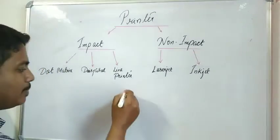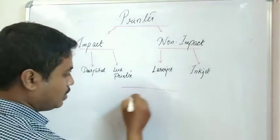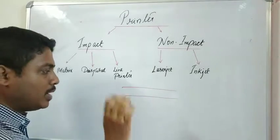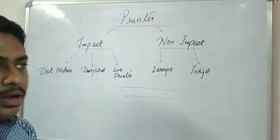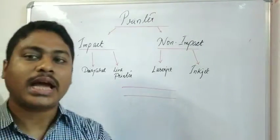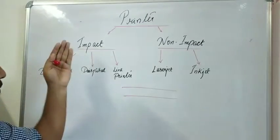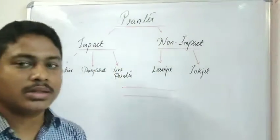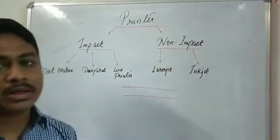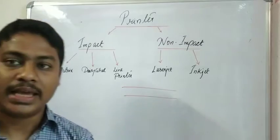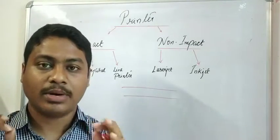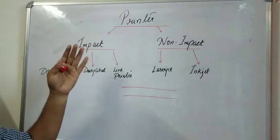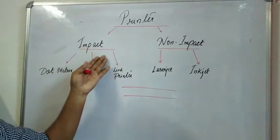In impact printers, there is a hammer and after the hammer strikes, it types on the page. Non-impact printers, on the other hand, do not have any hammer that hammers on a ribbon.